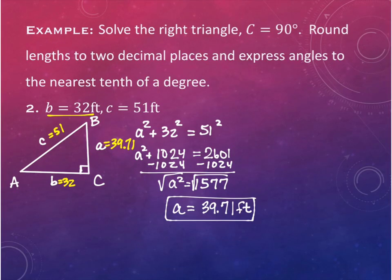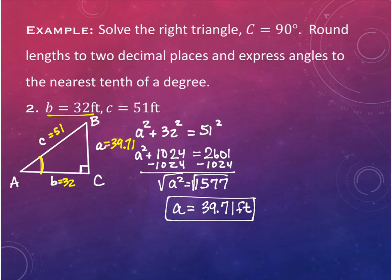Now we need to find angles A and B. For angle A, I don't want to use the 39.71 we just found - if I made an error there, I'll make more errors. Also, the given values 32 and 51 have no decimals, so they're easier to work with.